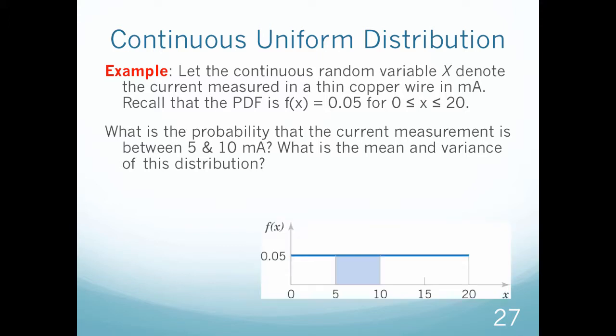First, I like to visualize what's going on. I have this graph between 0 and 20, and I want to know the probability of being between 5 and 10. This shaded region is what I want to calculate. So the probability that x is between 5 and 10, I integrate from 5 to 10, and I get 0.25.